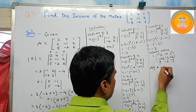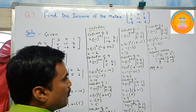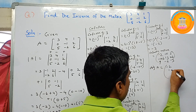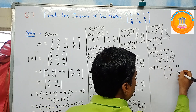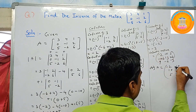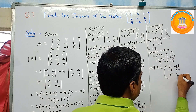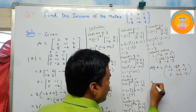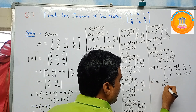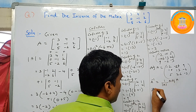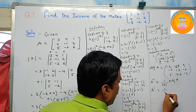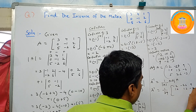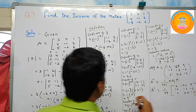To find the adjoint, transpose the cofactor matrix by changing rows into columns. The adjoint of A is: first column minus two, ten, five; second column minus twenty-six, thirteen, twenty-six; third column nine, minus six, minus three. Now using the inverse formula, A inverse equals one by determinant of A into adjoint A. Since the determinant of A is thirty-nine, A inverse equals one by thirty-nine times the matrix with rows: minus two, minus twenty-six, nine; ten, thirteen, minus six; five, twenty-six, minus three.